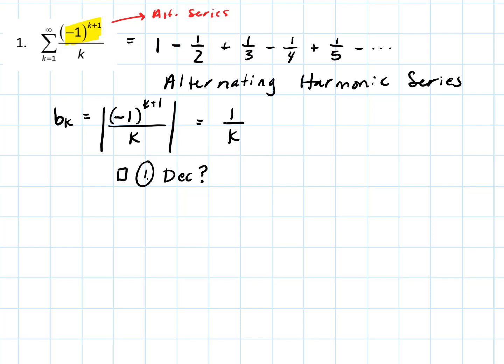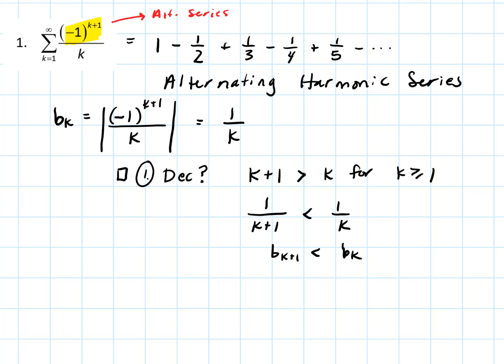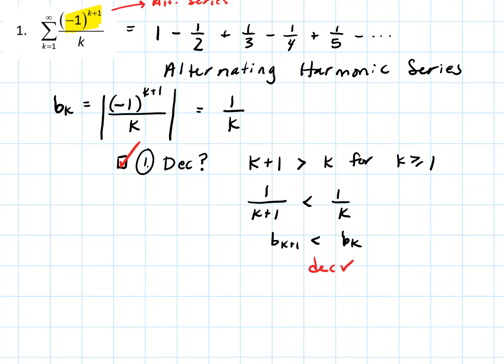Is one over k decreasing? We have a couple of ways to show it: we could use function notation and show the derivative of the connected function is negative, or we could use an inequality. Here the inequality works: k plus one is always bigger than k for k greater than or equal to one, so one over k plus one is less than one over k. So b sub k plus one is less than b sub k — it satisfies the decreasing condition.